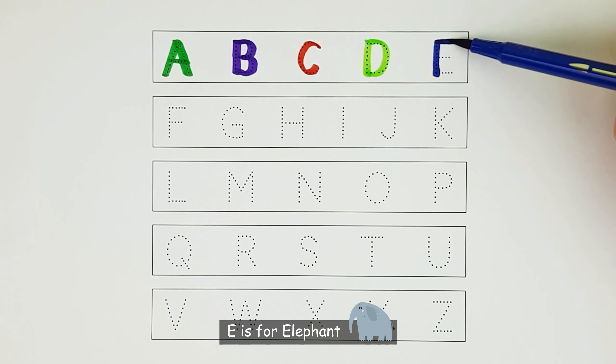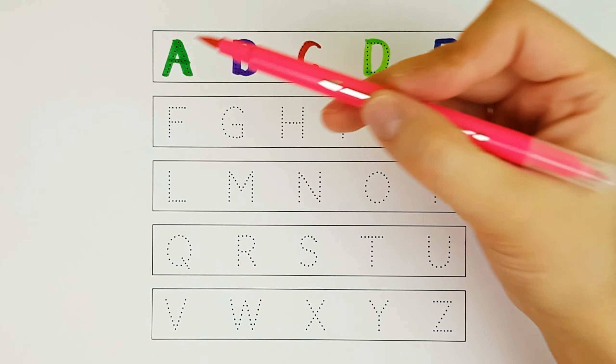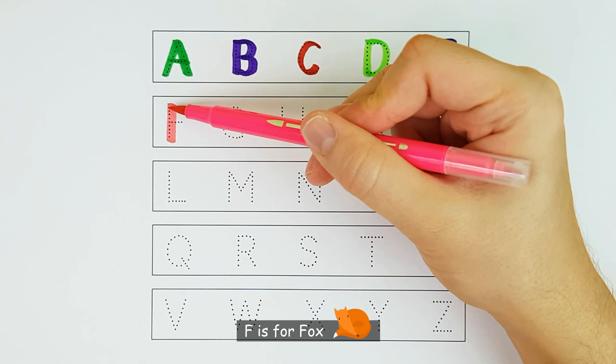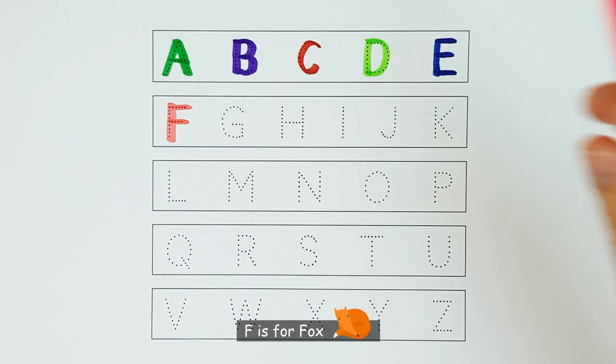E. E is for elephant. F. F is for fox. F.